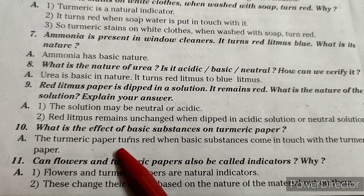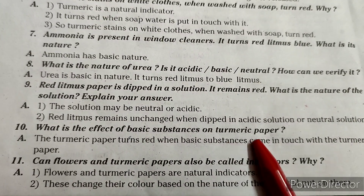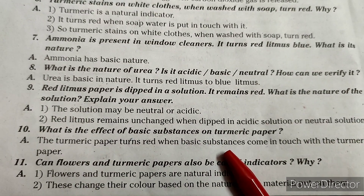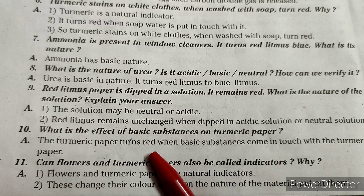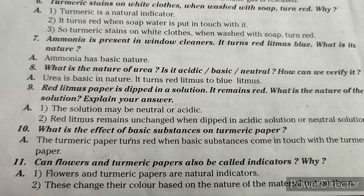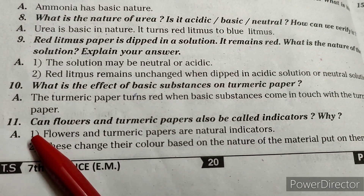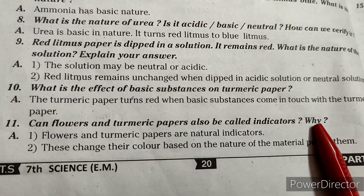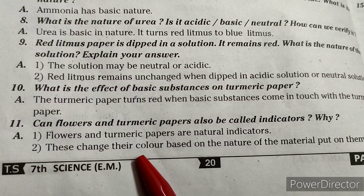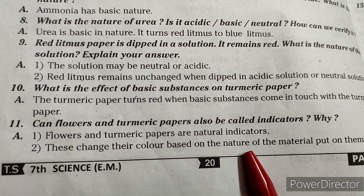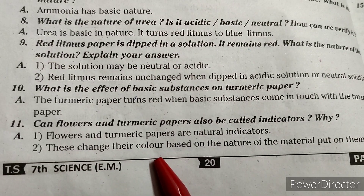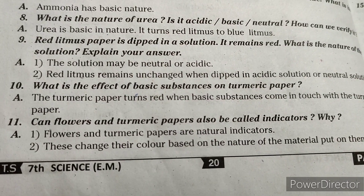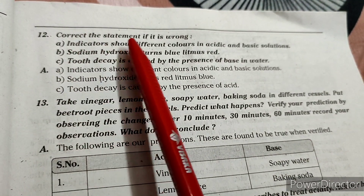Tenth question: what is the effect of basic substances on turmeric paper? Answer: the turmeric paper turns red when basic substances come in touch with it. Eleventh question: can flowers and turmeric papers also be called indicators? Why? Answer: flowers and turmeric papers are natural indicators. These change color based on the nature of the material put on them.